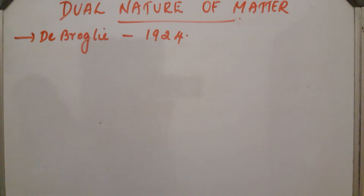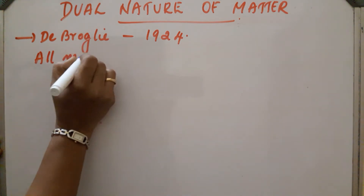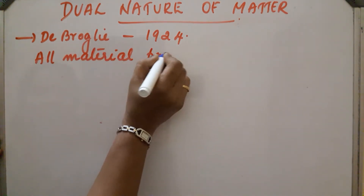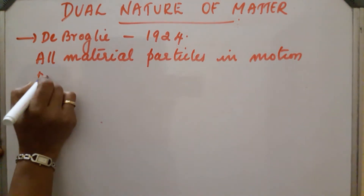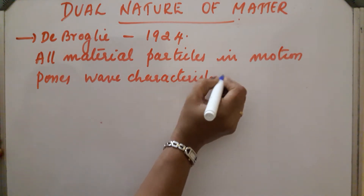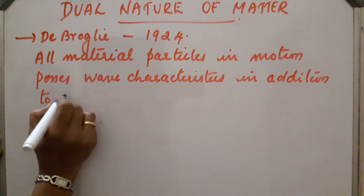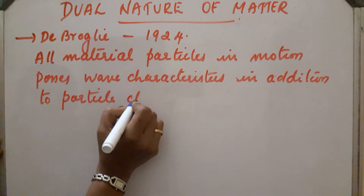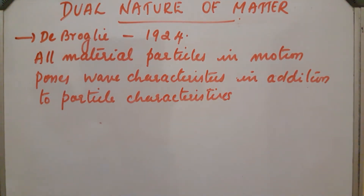Particles like electrons, protons, etc. possess dual character. So according to de Broglie, all material particles in motion possess wave characteristics in addition to particle characteristics.